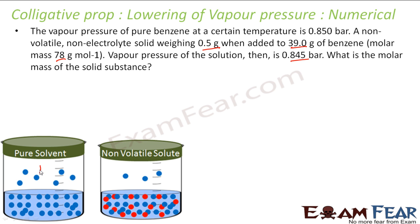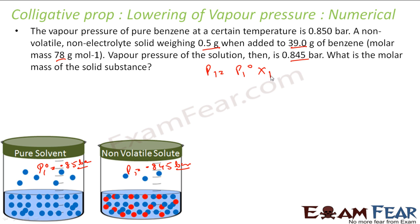Pure benzene vapor pressure is P0, given as 0.85 bar. The new vapor pressure P1 is less — it is reduced from 0.850 to 0.845. We know that P1 is nothing but P0 into x1, where x1 is the mole fraction of benzene: moles of benzene divided by moles of benzene plus moles of solute.